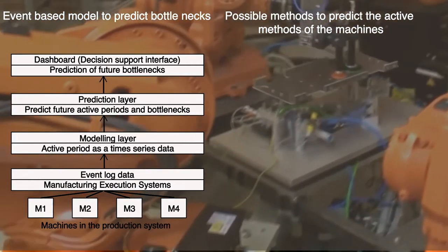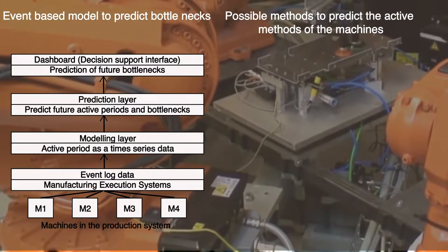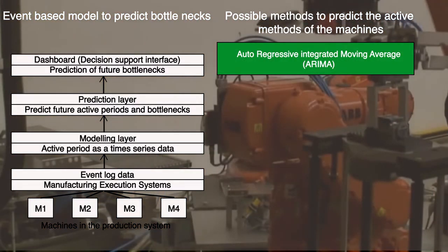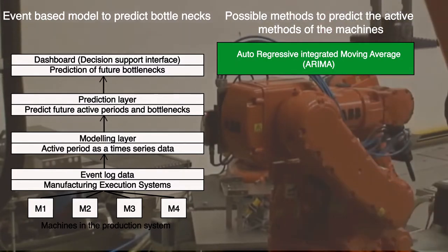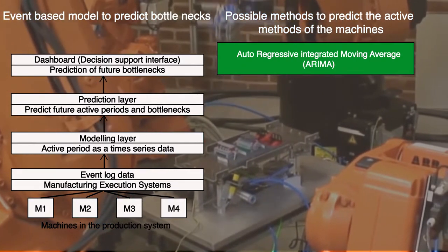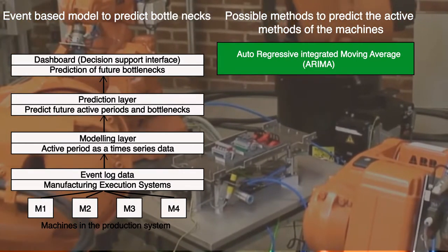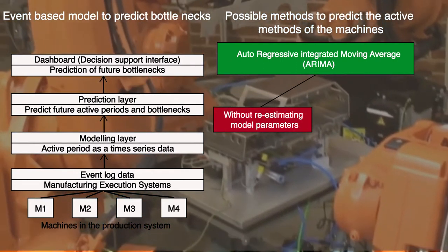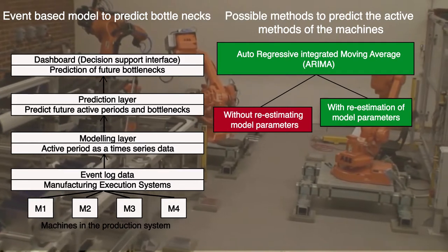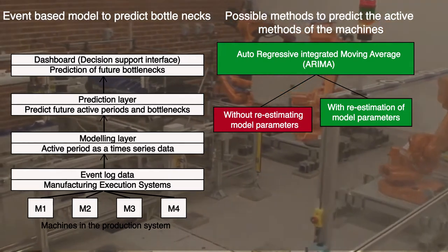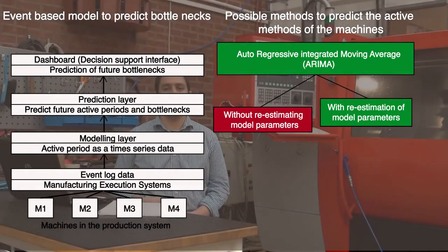In this project, we used a time series-based algorithm called the auto-regressive integrated moving average algorithm, or ARIMA, which exploits the structure in the historical data to predict the future active periods of the machine. The ARIMA algorithm has two flavors: one without re-estimating the model parameters, and one with re-estimating the model parameters. We chose the version with re-estimation due to the dynamics in the production system and the continuous improvement activities taking place on the machines.